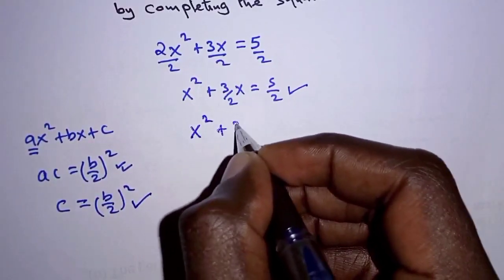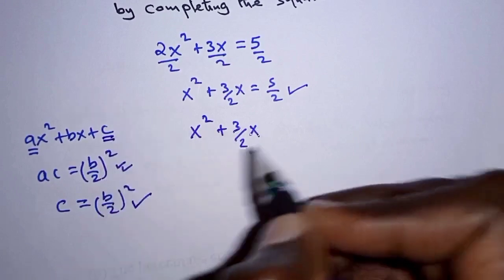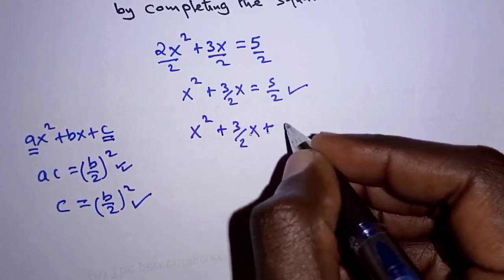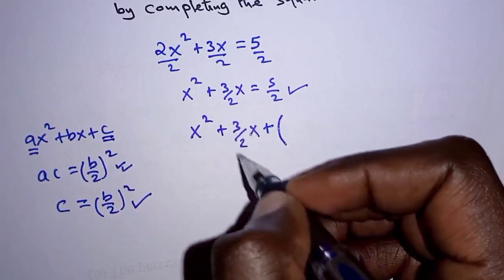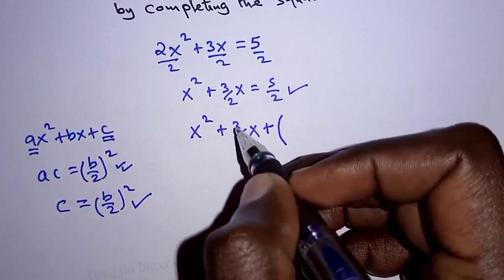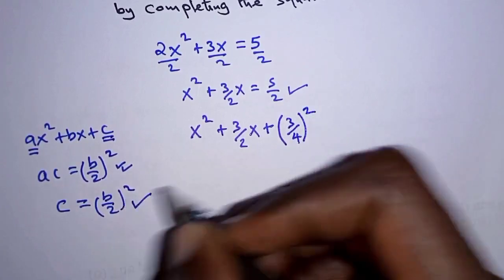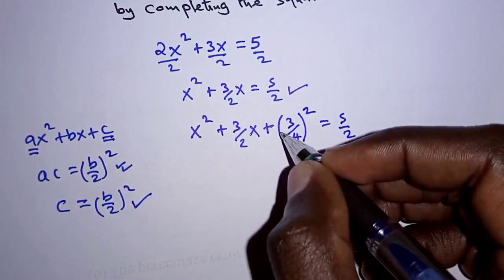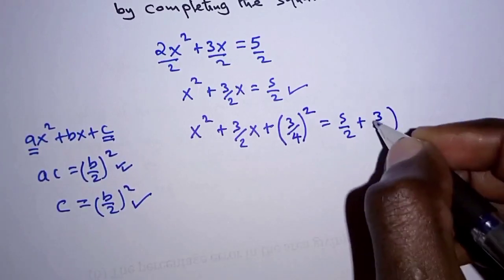Applying this to our equation x squared plus 3 over 2x, we find the constant term c by computing b over 2 squared. Here b is 3 over 2, so 3 over 2 divided by 2 is 3 over 4, and squaring gives us 9 over 16. We add 9 over 16 to both sides, so the right hand side becomes 5 over 2 plus 9 over 16.